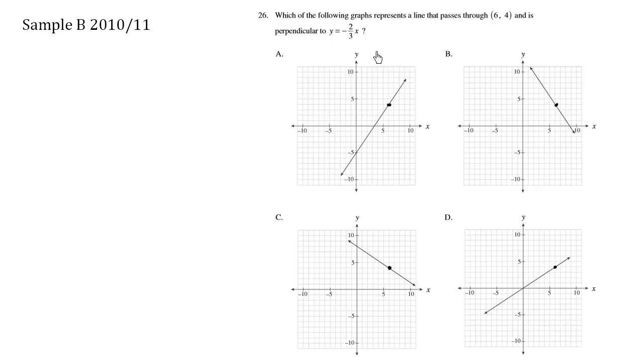So we want the line that is perpendicular to this. Perpendicular to this line here that has a slope of negative 2/3. We're interested in a line that has a slope that is the negative reciprocal of this number. So we're interested in an m, a slope, that is positive 3 over 2.